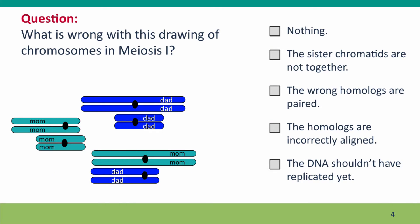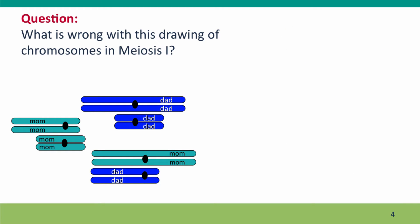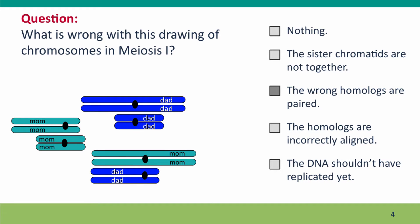Here's a drawing of chromosomes in meiosis 1 to remind you what the problem is. What's wrong with this drawing? What's wrong is that the wrong homologs are paired. The big dad chromosome should be paired with the big mom chromosome, but it's paired with a little dad chromosome. The big mom chromosome is paired with one of the dad chromosomes, but it's not the right one. So the daughter chromosomes are definitely going to get the wrong, incomplete, mixed-up sets of chromosomes if this meiosis went to completion.